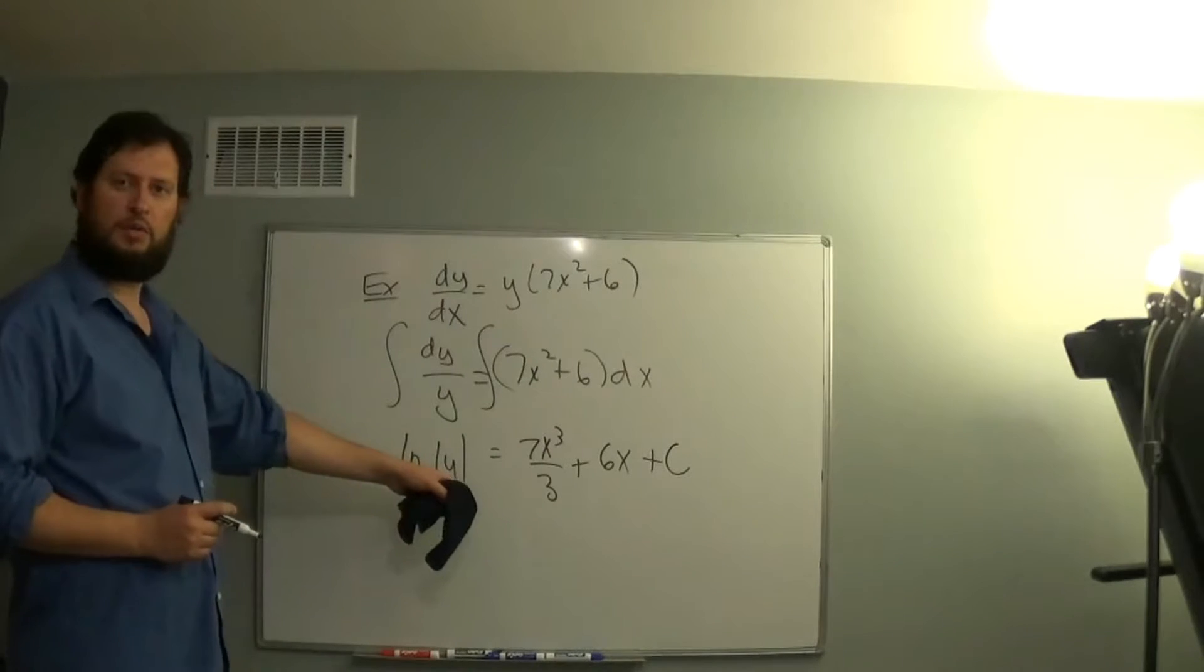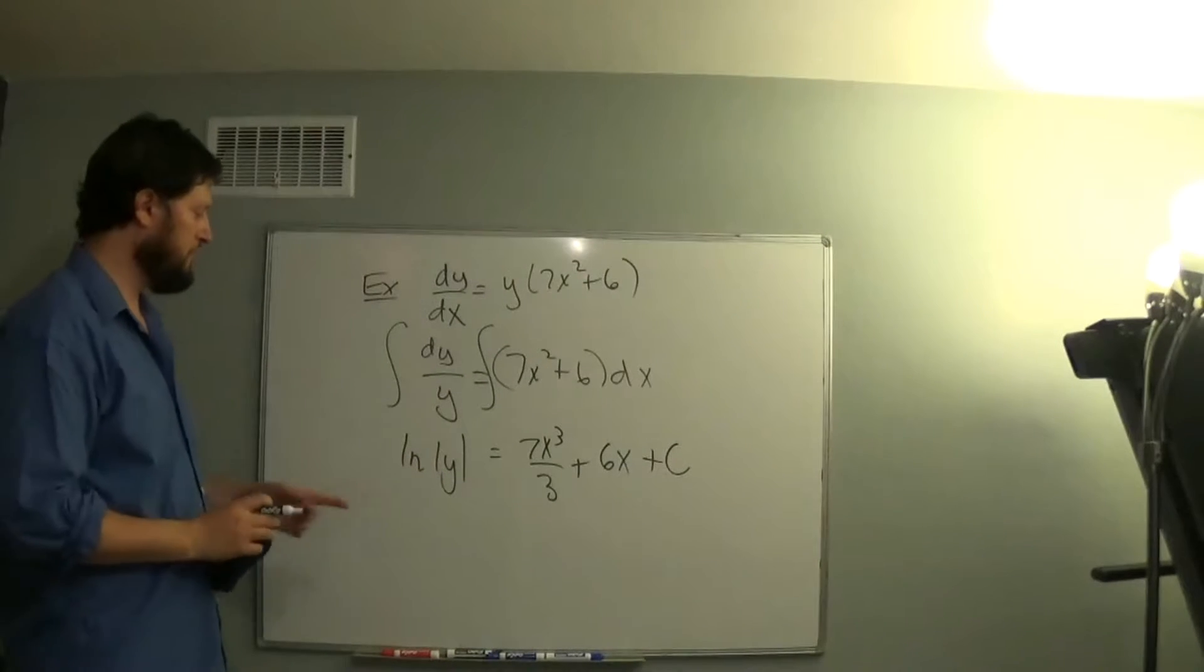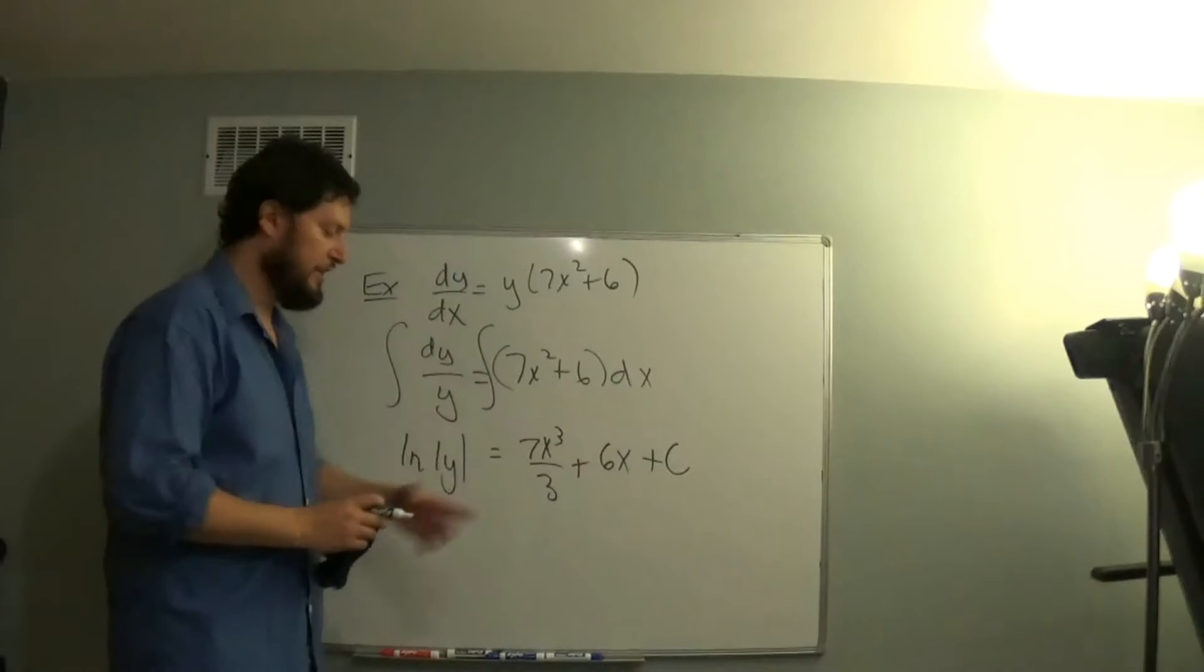To solve for y, we convert a log equation into an exponential equation by raising e to the right hand side to get absolute value of y.